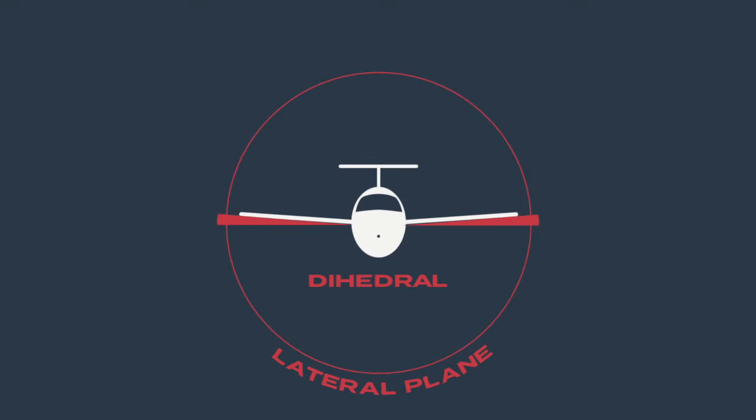By tilting the wingtips upwards, the aeroplane becomes naturally more stable in the lateral plane. This is called dihedral, and in simple terms, this is how it works.